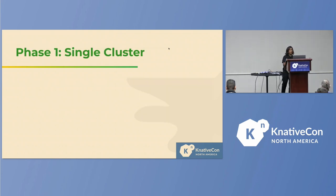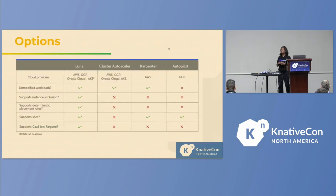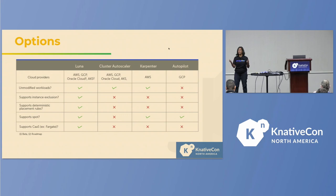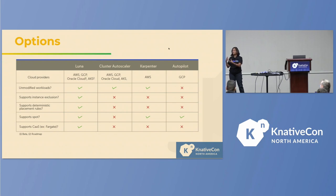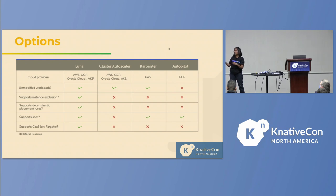Let's look at what options exist for using just-in-time compute for a single Kubernetes cluster. There is the default cluster autoscaler, which does bin packing — packing your pods into larger compute nodes. But there are also other options that do bin selection, which provisions a single compute node per pod. This suits really well for Knative functions because the form factor is pretty small. Economical compute shapes like ARM and smaller on-demand and spot instances are a great fit. Projects include Karpenter from AWS, Autopilot from GCP, and Luna, which is cloud-vendor agnostic and control-plane agnostic.